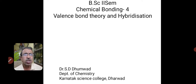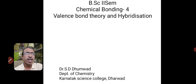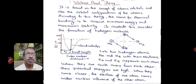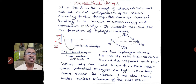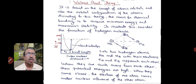Today, let us study another theory known as valence bond theory and what this valence bond theory suggests. Let us take the valence bond theory to explain the formation of hydrogen molecule. It is based on the concept of atomic orbitals and the orbital configuration of the atoms. According to valence bond theory, the cause for chemical bonding is to acquire minimum energy and maximum stability.